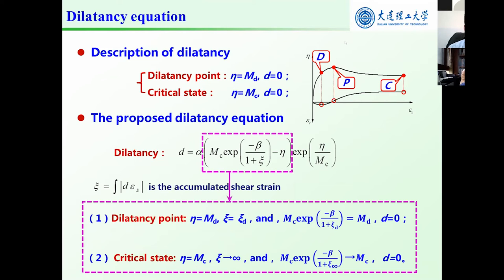In our equation, accumulated shear strain is used to consider the whole shear process. The non-linear behavior can be reflected by the ratio eta and M_c. The equation can satisfy the requirements of all special state points: dilatancy, peak stress, and critical state.